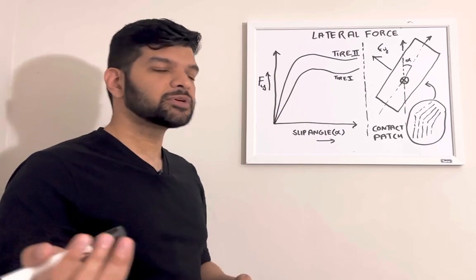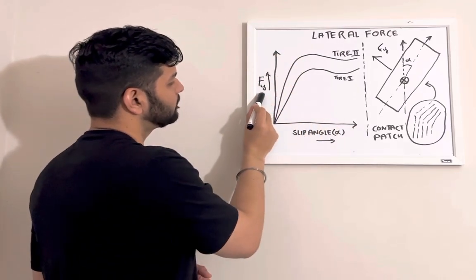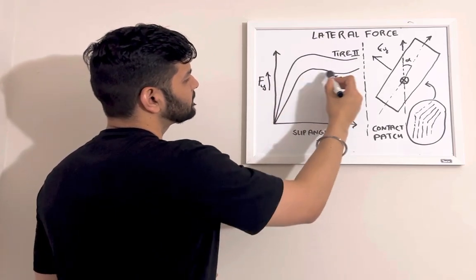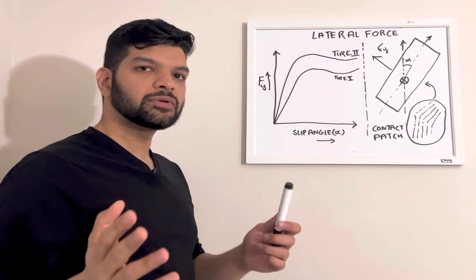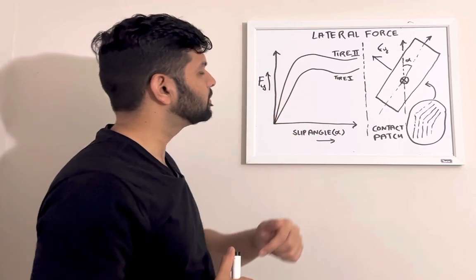From that machine, we get this graph. This is lateral force versus slip angle and the shape is usually like this. Here we are having two graphs from two different tires. This is tire 1 and this is tire 2.